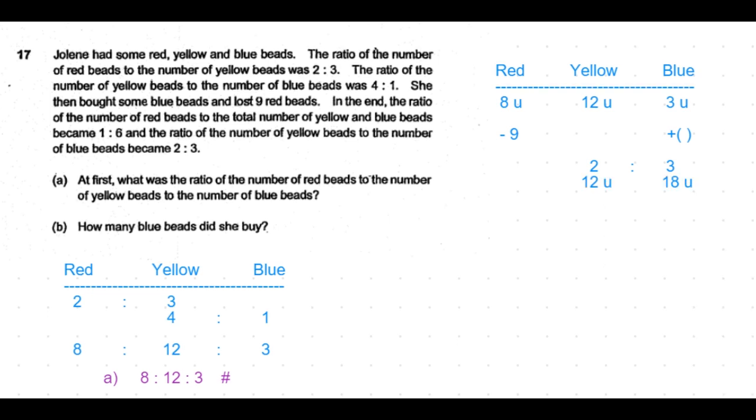If 12 units correspond to 2, 18 units correspond to 3 in the ratio 2:3 between yellow to blue.